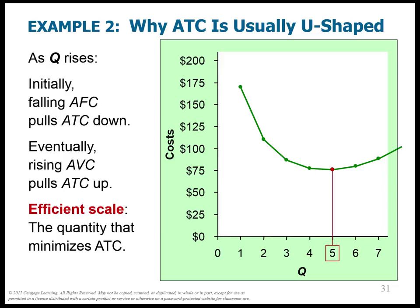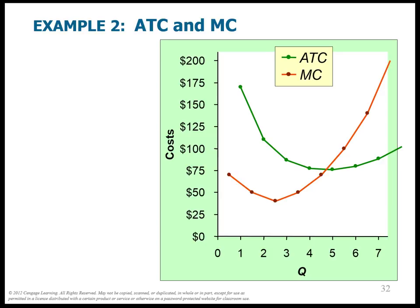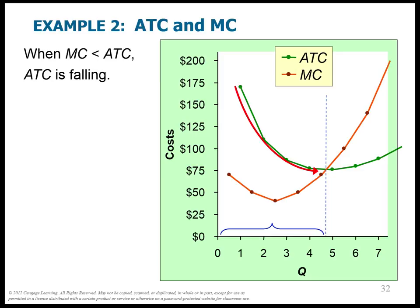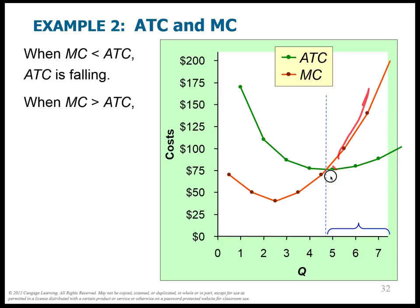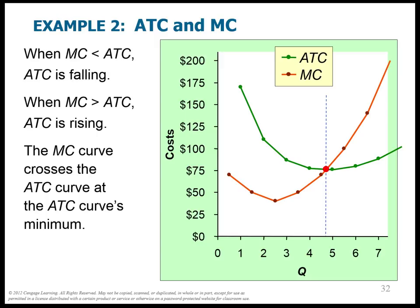If I throw the marginal cost curve on the graph, you'll notice a really important aspect. When the marginal cost curve is below the ATC curve, the ATC curve falls. However, when the marginal cost curve is above the ATC curve, the ATC curve rises. So the marginal cost curve always crosses the ATC curve at its minimum point. If you want to find the efficient scale, simply set ATC equal to marginal cost, and you've found the bottom of the ATC curve.